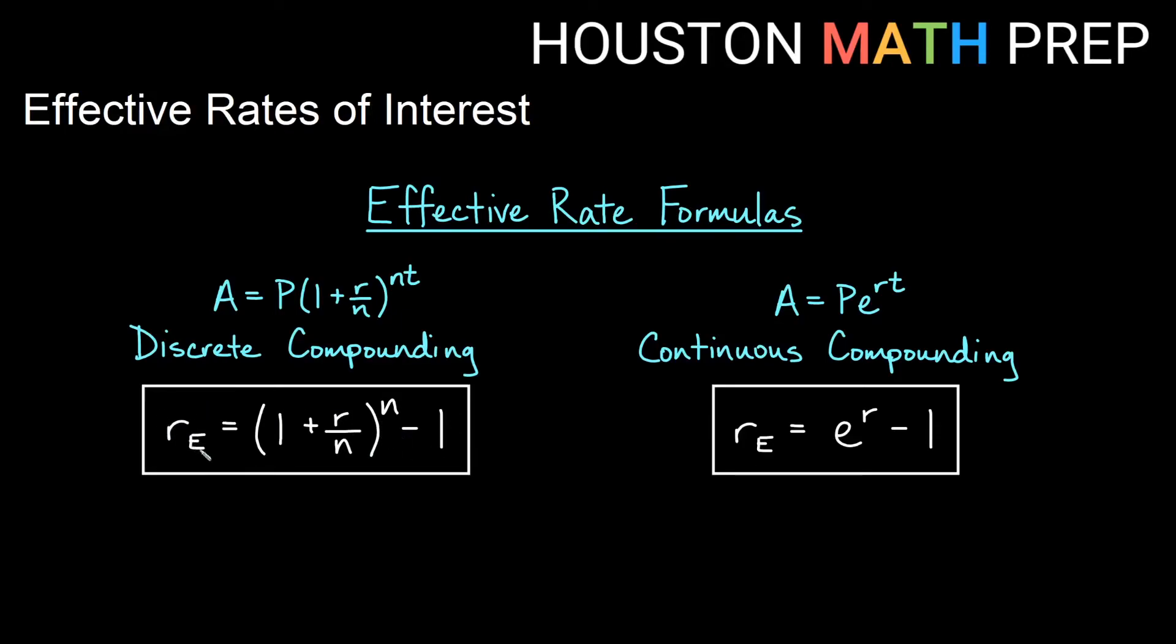You'll see this little r sub e. This looks like interest rate, but this is actually rate effective. So this is our effective rate, different than just plain r. Our continuous compounding is when we use a equals p times e to the rt. And our formula for the effective rate when using this formula is e to the r minus 1. Remember that e is a button on your scientific or graphing calculator. This is a constant that's about 2.7. So to get an accurate value for this, make sure you're actually using the e key on your calculator to find these.